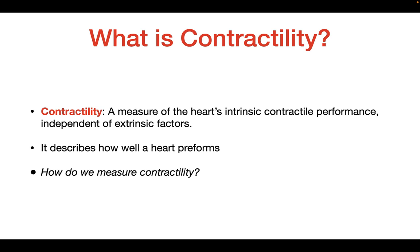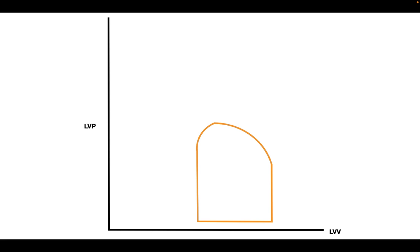So how do we actually measure contractility? One way is as follows. Imagine we have a human heart with this pressure volume loop. The point we're going to look at marks the end of the isovolumic contraction — when both the mitral valve and aortic valve are closed, and the ventricle contracts until it builds enough pressure to exceed the pressure inside the aorta, allowing the aortic valve to open and blood to flow from the ventricle into the aorta.